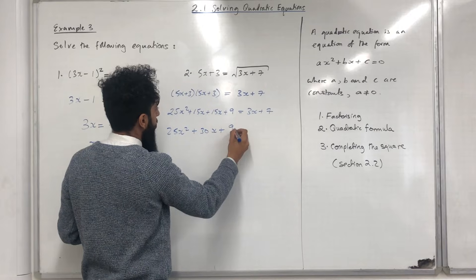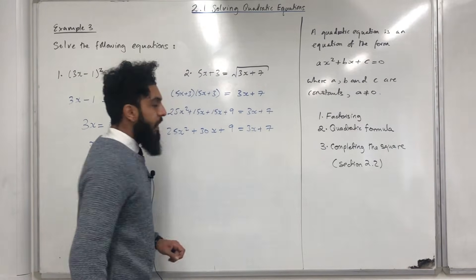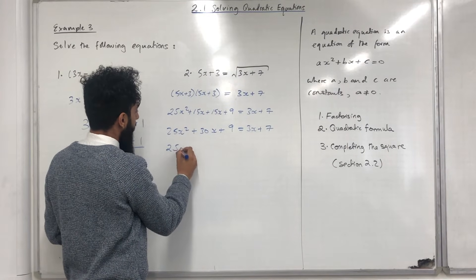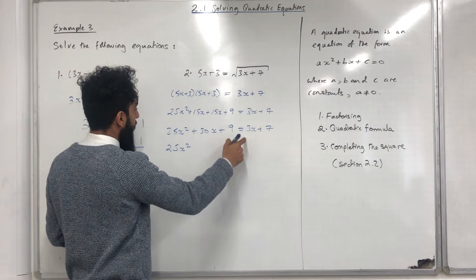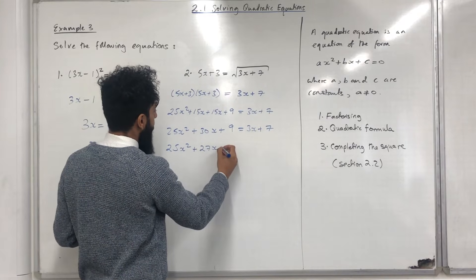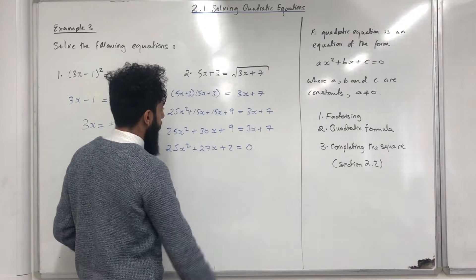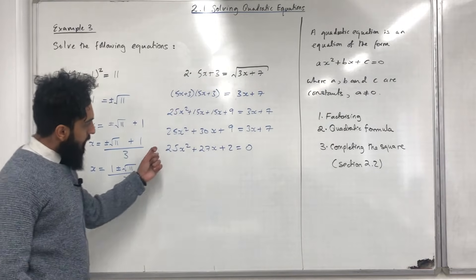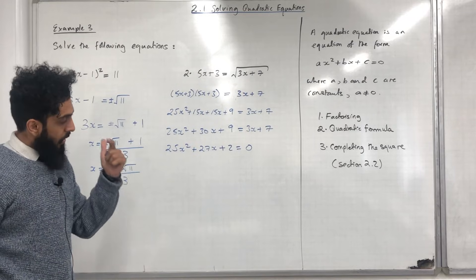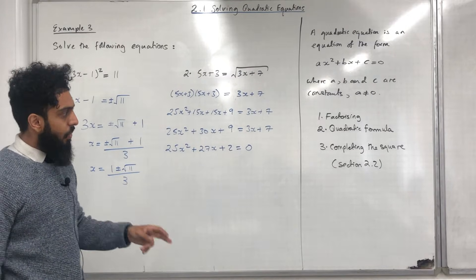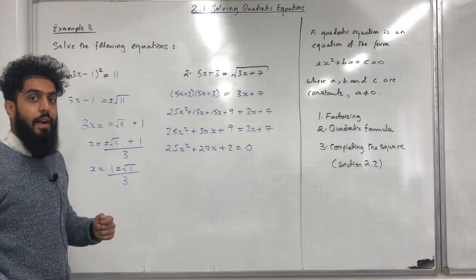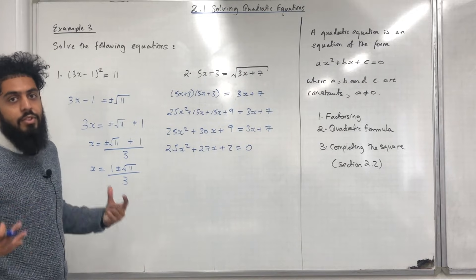Taking everything to the left-hand side gives 25X² + 30X - 3X + 9 - 7 = 0, which simplifies to 25X² + 27X + 2 = 0. Now I can solve this quadratic equation by using factorisation, the quadratic formula, or completing the square (covered in section 2.2). I'm going to solve by factorising.